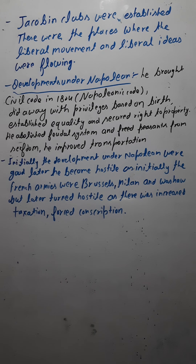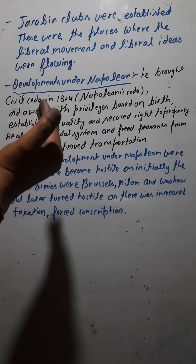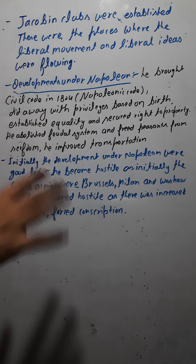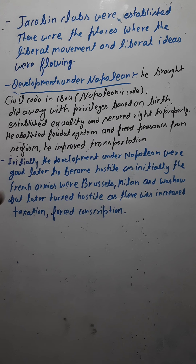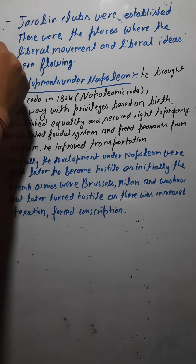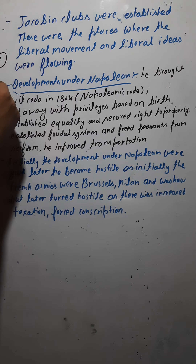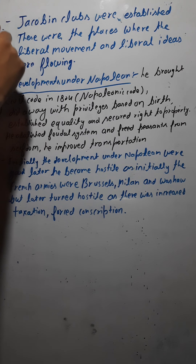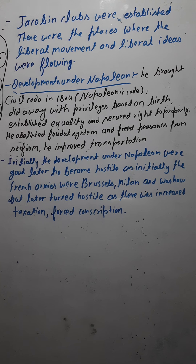These clubs were established in different areas of Europe during the time of the French Revolution. Now we are going to see some developments regarding Napoleon, because questions about the good and bad points about Napoleon can be asked in examinations. Earlier there was monarchy in France, then it became democratic, then the Napoleonic era came and it became hostile again.